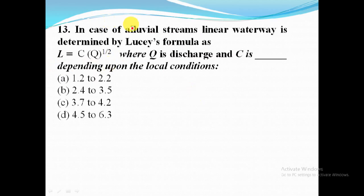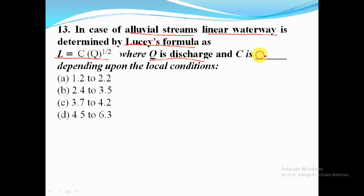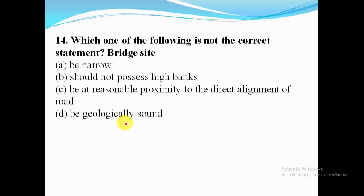In case of alluvial streams, linear waterway is determined by Lacey's formula: L = C × Q^(1/2), where Q is discharge and C is a constant depending upon local conditions. The value of C is 4.5 to 6.3.